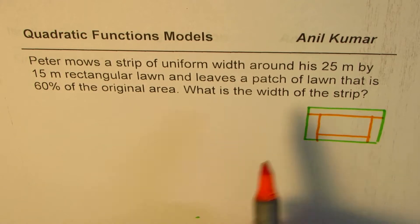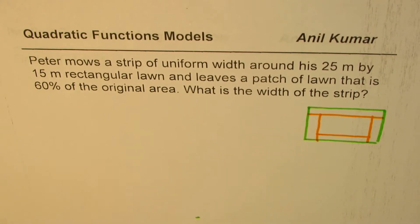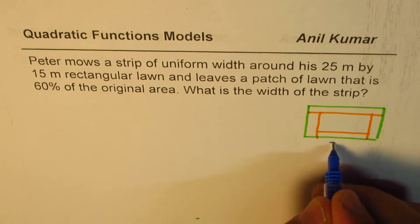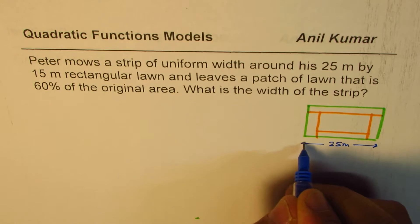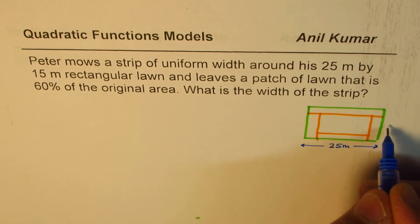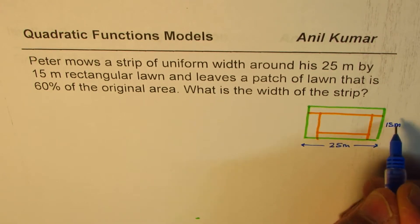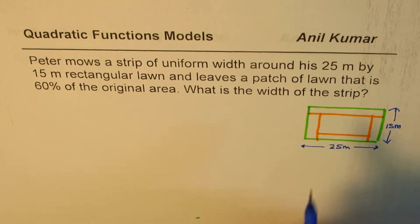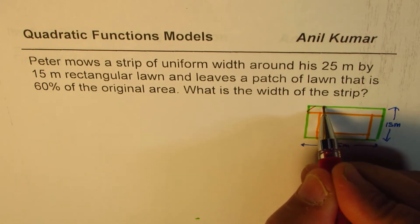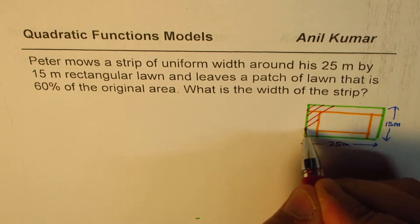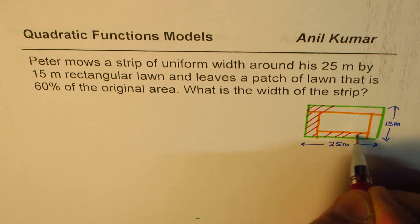What we're given here is that the lawn is 25 meters by 15 meters. So this is 25 meters and the height is 15 - the length and width of this rectangular lawn. Now once you remove a portion, let's say this portion has been removed, you're left with this.